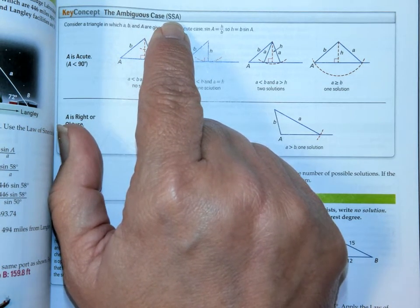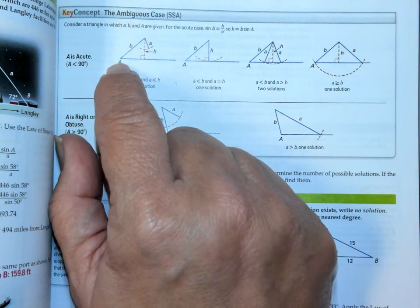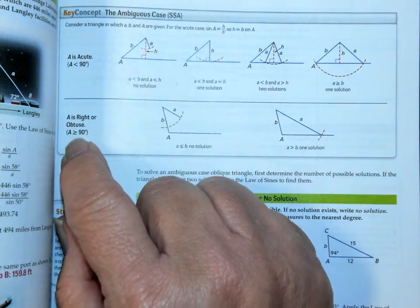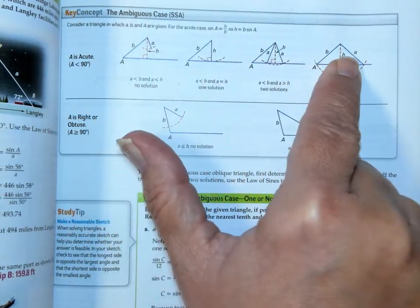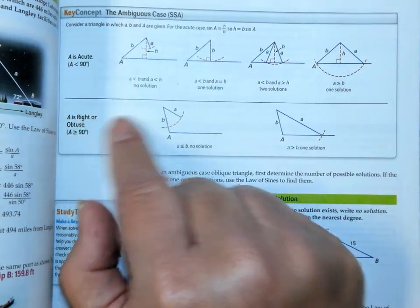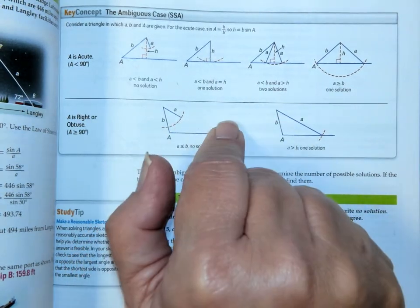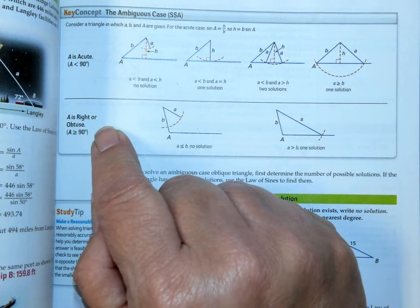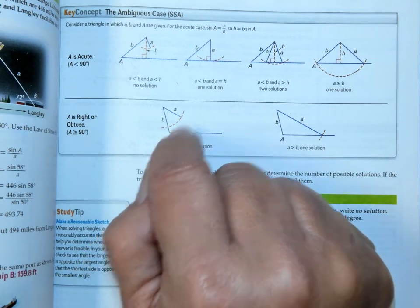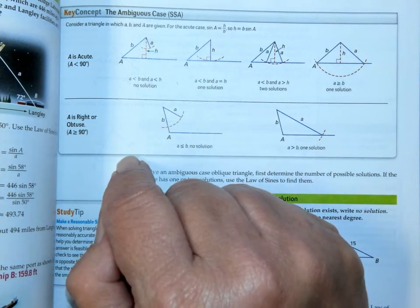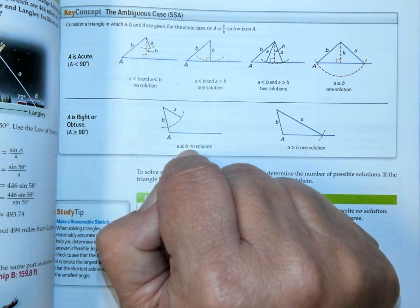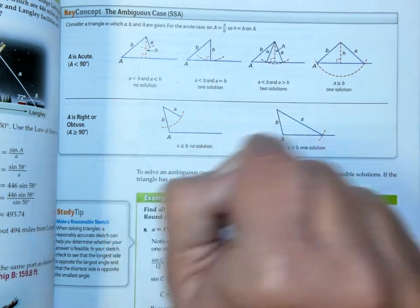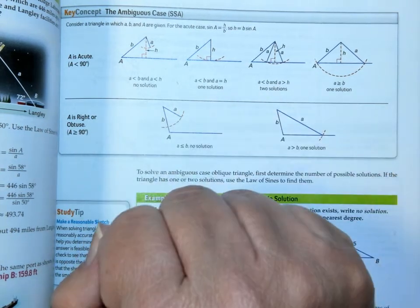You're going to have to do this little check. First, the one angle that you know, is it acute or is it obtuse? If it's acute, you're going to follow these rules. If it's obtuse, you're going to follow these rules. If it's obtuse, the rules are very easy. You just compare your two side lengths. If A is smaller than B, there's no solution. If A is greater than B, there's one solution. Not too hard.